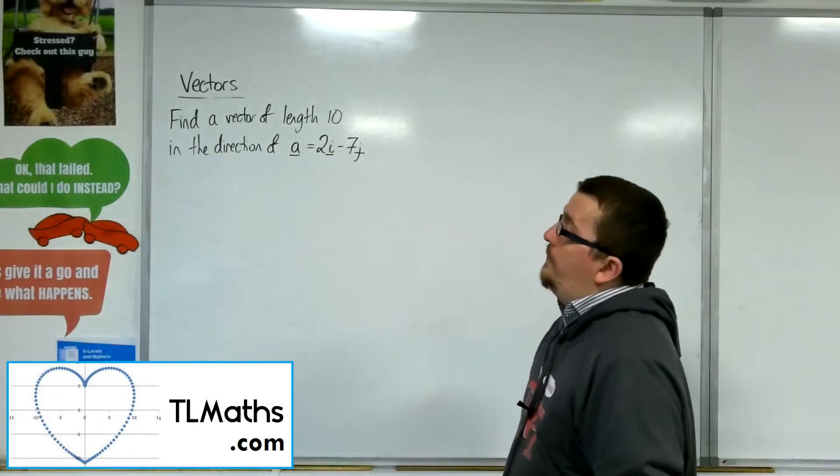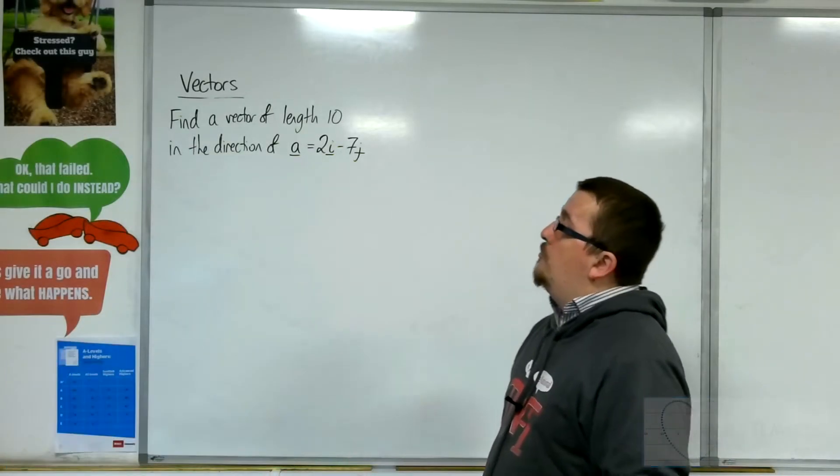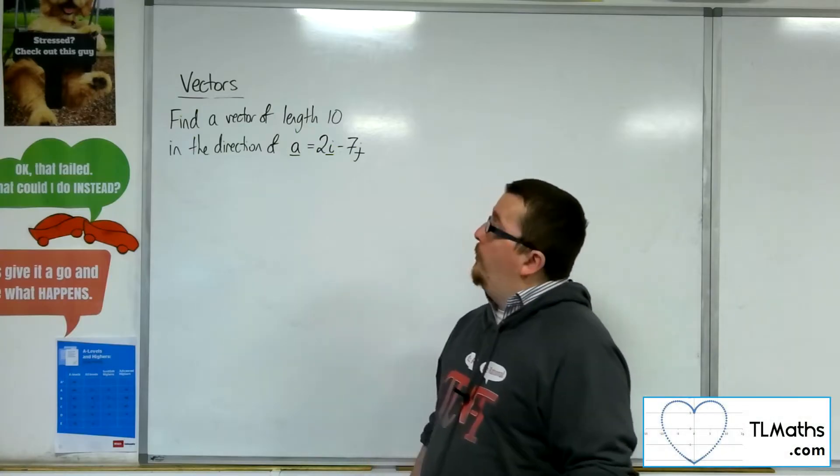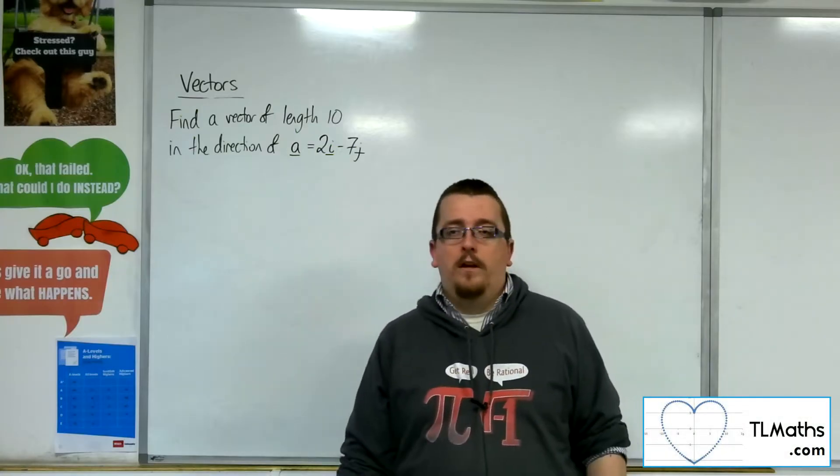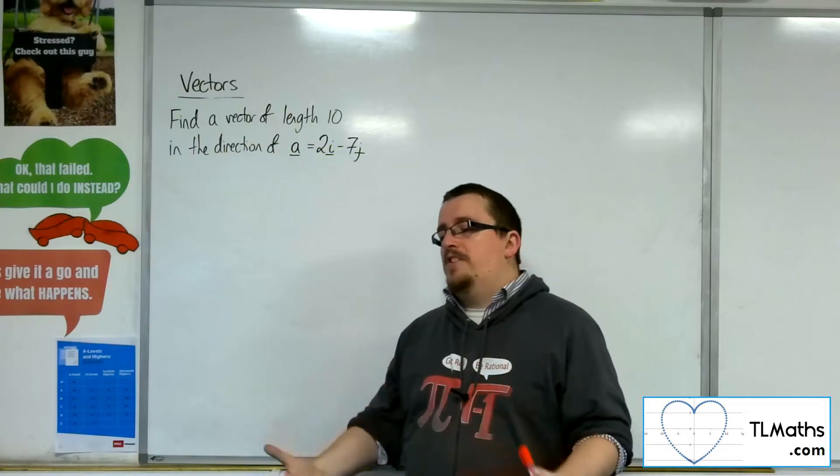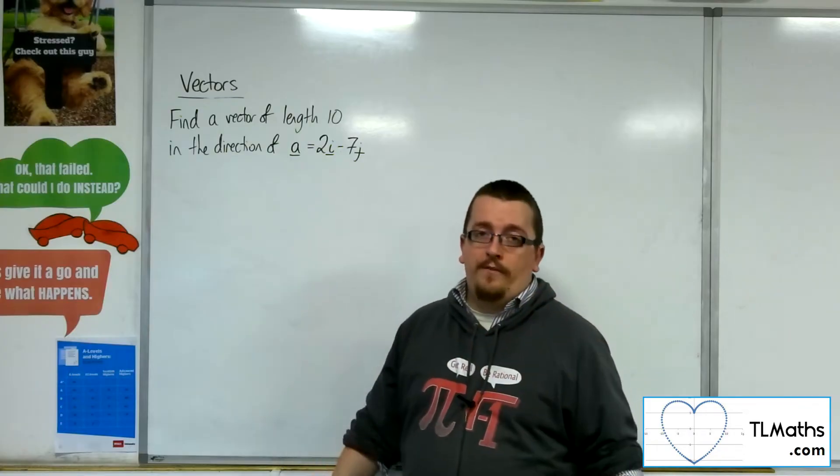So let's say I want to define a vector of length 10 in the direction of A equals 2I minus 7J. So this brings about an idea of unit vectors.